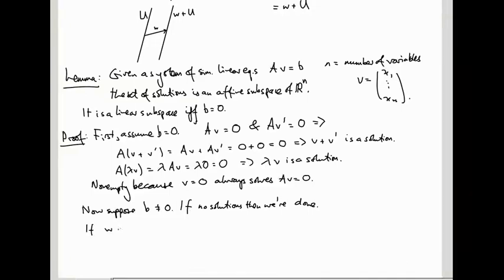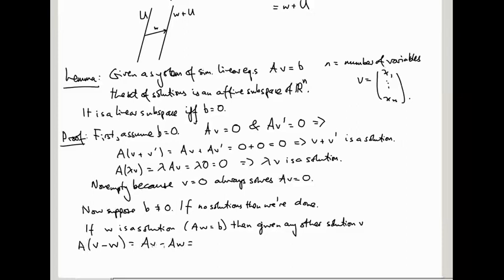If there are solutions, so if W is a solution, i.e., AW equals B, then given any other solution V, V minus W satisfies the following equation: A(V minus W) is AV minus AW, and that's B minus B, which is 0.